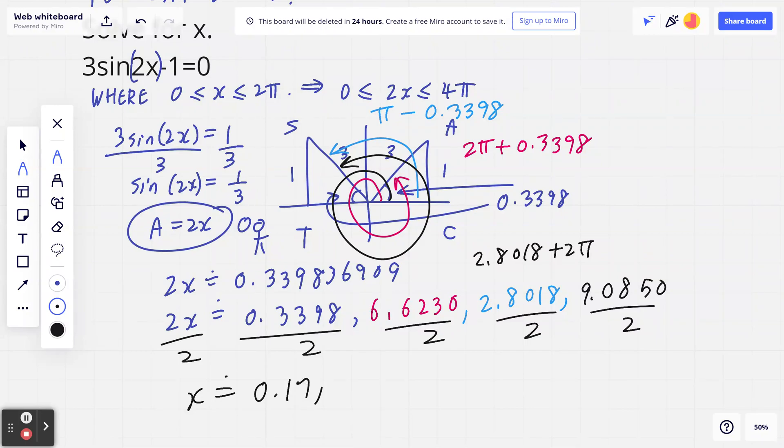Likewise, 6.623 divided by 2, if I round this to 2 decimals, it's going to be 3.31. If I take 2.8018 divided by 2, that's going to be 1.40. Last but not least, 9.0850 divided by 2, it's going to be 4.54.